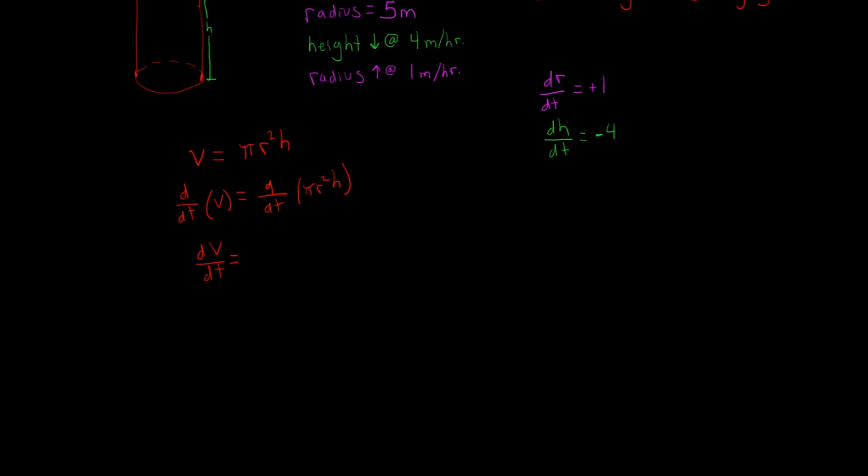So using this information we're going to find the derivative. First, we're going to take the derivative of the radius term on one part, and then we're going to add the derivative of the height term. We'll use implicit differentiation here.